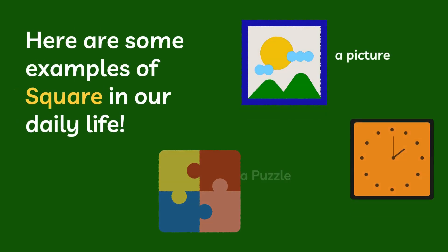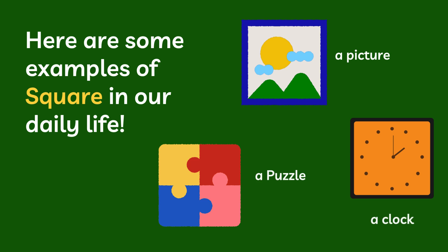Here are some examples of squares in our daily life, such as a picture, a puzzle, and also a clock. These all are square shaped.